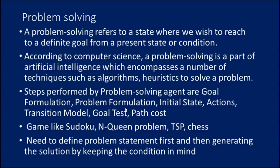Remember, an optimal solution has the lowest path cost among all the solutions. The initial state, actions, and transition model together define the state space of the problem implicitly. The state space is the set of all states reachable from the initial state by any sequence of actions. The state space forms a directed graph where nodes are states, links between nodes are actions, and the path is a sequence of states connected by a sequence of actions.